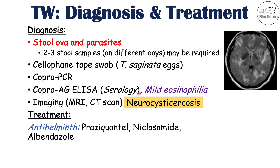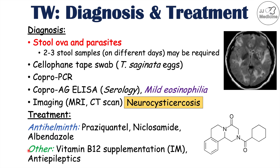All of these conditions can be treated with anthelmintic therapy: praziquantel, niclosamide, and albendazole. Albendazole is going to be more important in the case of neurocysticercosis. Other important treatments include vitamin B12 supplementation in the case of Diphyllobothrium latum infection if the patient has a vitamin B12 deficiency. It may be given intramuscularly because the patient may have issues with absorption of vitamin B12.